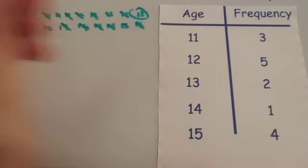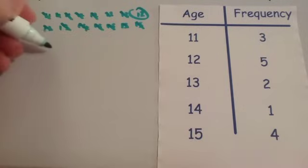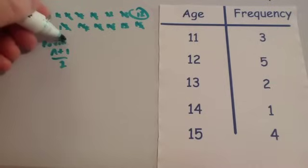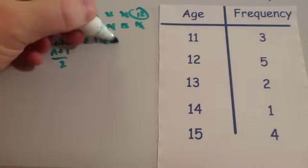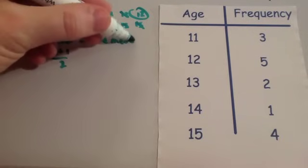Then we'll be left with 12. So that's one way to find the median. Alternatively, you could use the formula n plus 1 over 2 to find the position of the median.